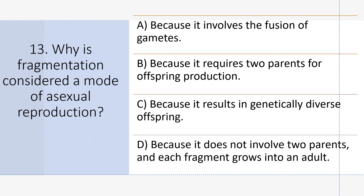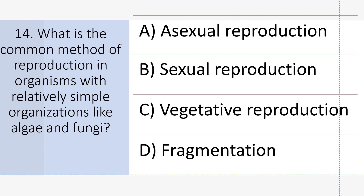Why is fragmentation considered a mode of asexual reproduction? Answer D: Because it does not involve two parents, and each fragment grows into an adult. What is the common method of reproduction in organisms with relatively simple organizations like algae and fungi? Answer A: Asexual reproduction.